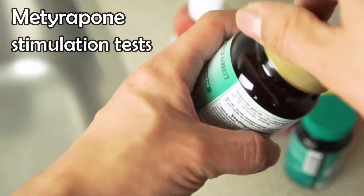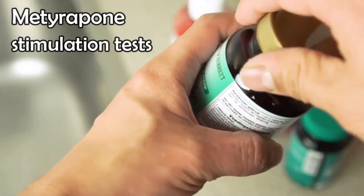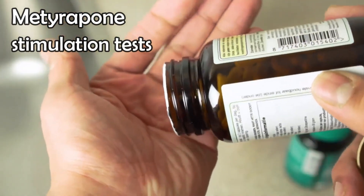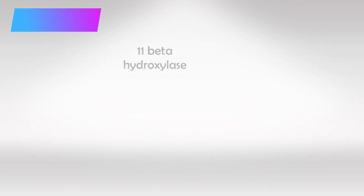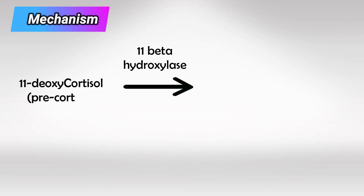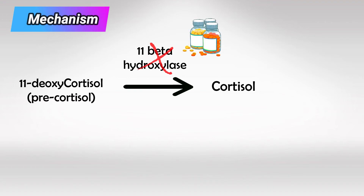Welcome back. In this video, we'll talk about the metyrapone stimulation test. During the synthesis of cortisol, the enzyme 11-β-hydroxylase converts the precortisol 11-deoxycortisol to cortisol. Metyrapone simply inhibits this enzyme, thus inhibiting the synthesis of cortisol.